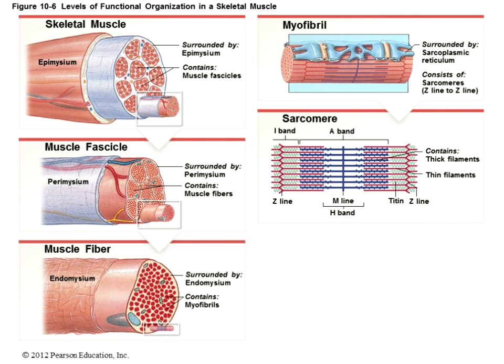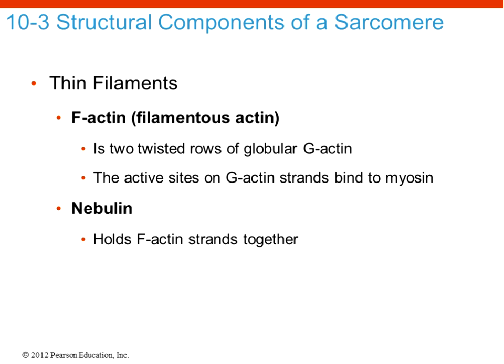We've now gone from the whole skeletal muscle — with the epimysium, fascicle, and muscle fiber — all the way down to the myofibril and then the sarcomere. We can look at the thick and thin filaments of actin and myosin, which are the actual contractile proteins. Next we want to look at these thick and thin filaments in great detail to see how contraction actually proceeds.